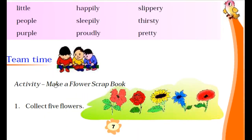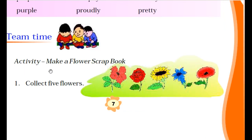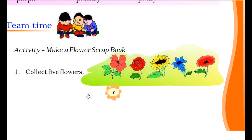Next is the Team Time activity. You have to make a flower scrapbook. A scrapbook is a book that has plain pages on one side and lined pages on the other. On the plain pages you paste flowers, and on the lined pages you write about them. First step: collect five different flowers.